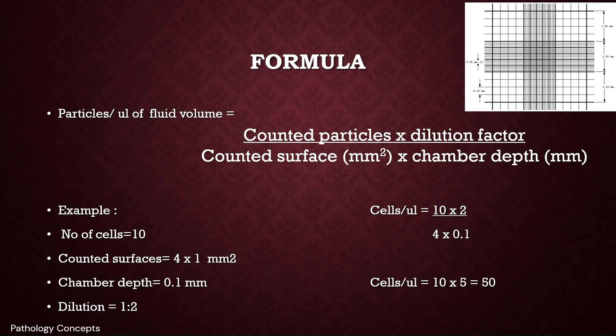The formula for counting cells is: cells or particles per microliter of fluid volume equals counted particles times dilution factor, divided by counted surface area times chamber depth. For example, if we count 10 cells in the 4 large outside corners, the counted surface is 4 × 1, chamber depth is 0.1, and dilution is 1:2. So the formula gives 10 × 2 divided by 4 × 0.1, which equals 50. Therefore, total cells is 50 per microliter of CSF.